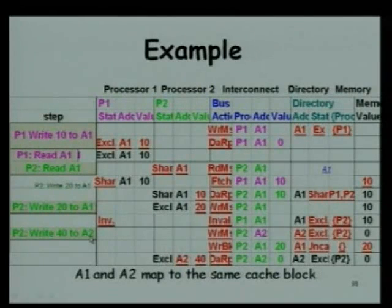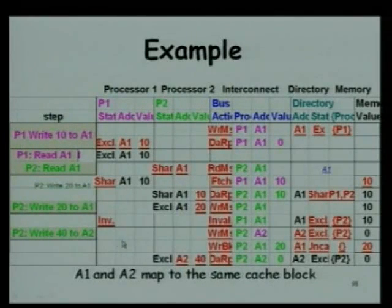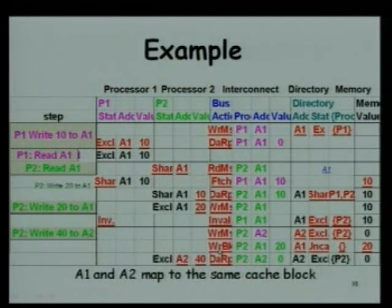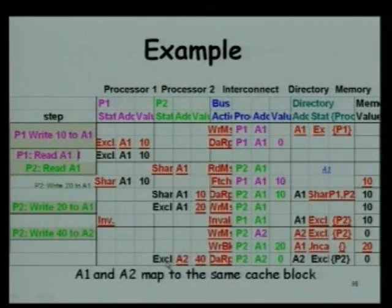What if P2 writes 40 to A2, where A2 is a different block but conflicts with A1, mapping to the same page or cache block? P2 generates a write miss for A2. The directory changes the sharer set for A2 to P2 and generates a write-back from P2 with value 20, which is then updated in memory. The state becomes exclusive, with a data reply of 0 and sharer set P2.